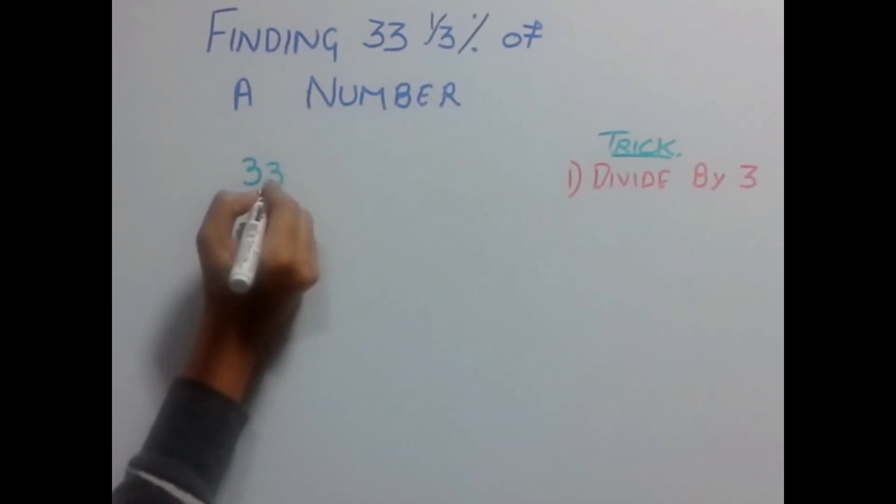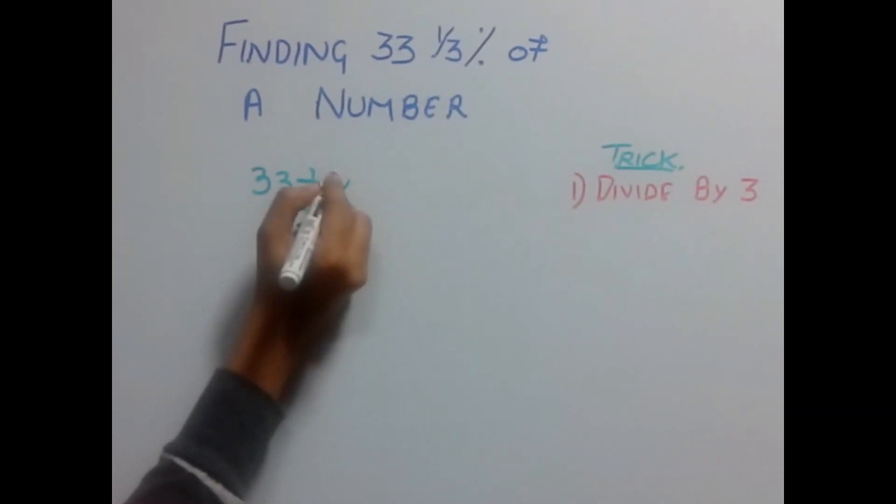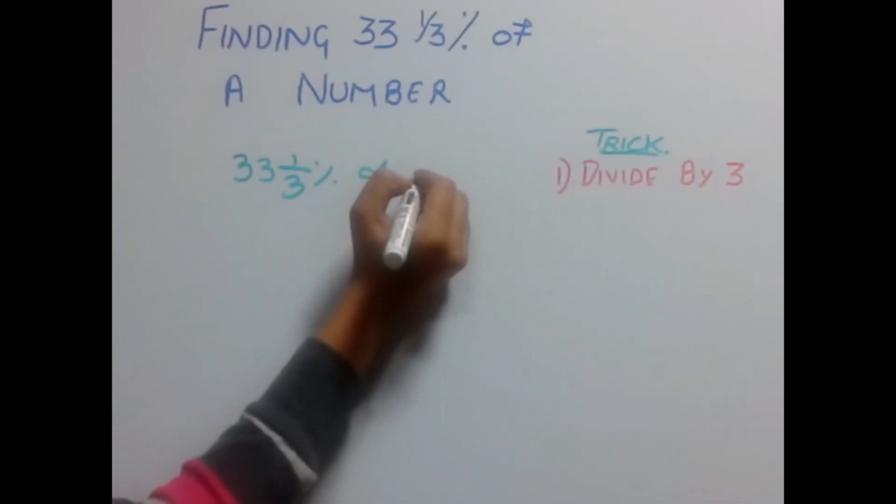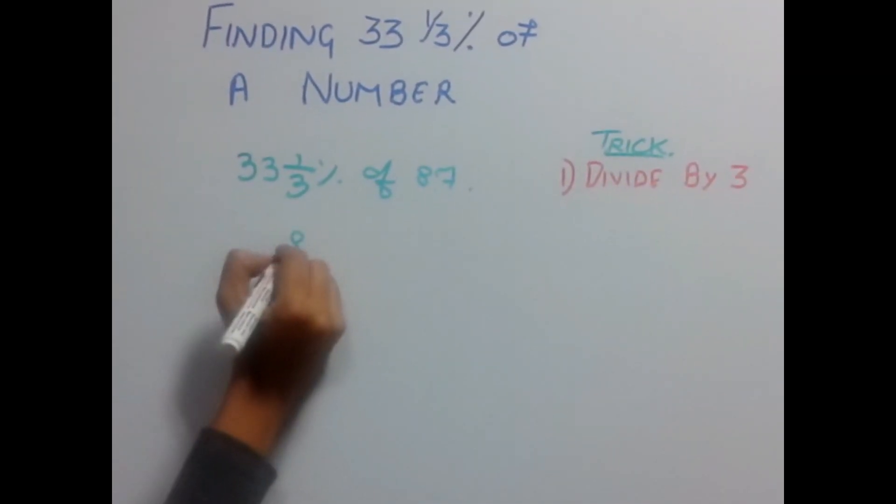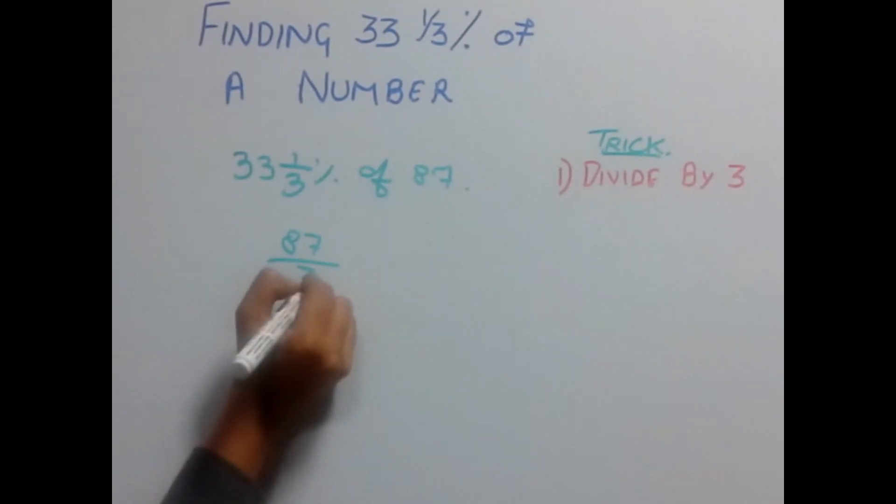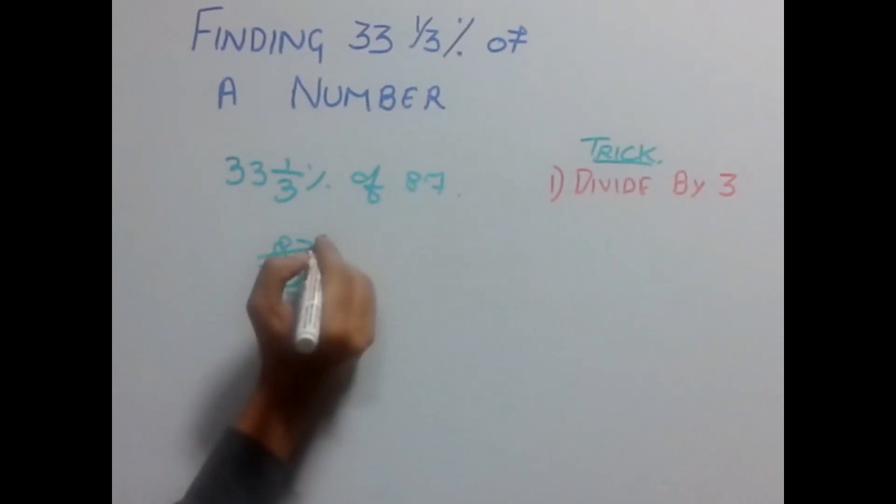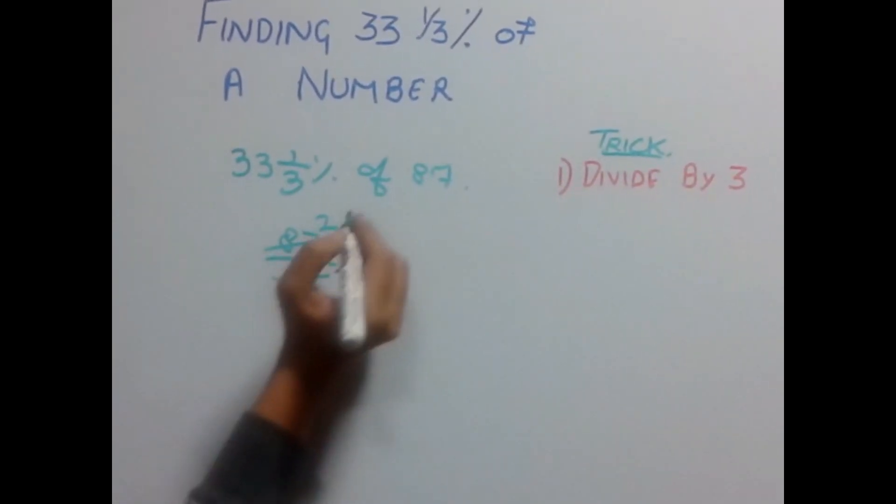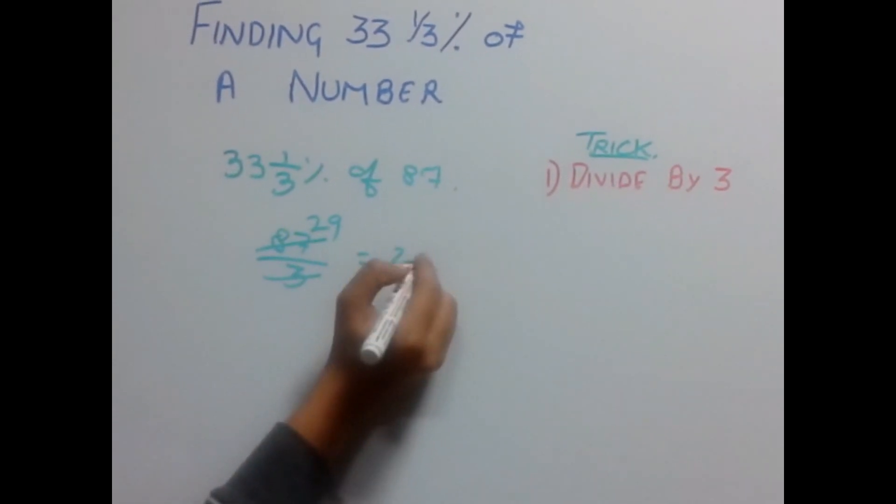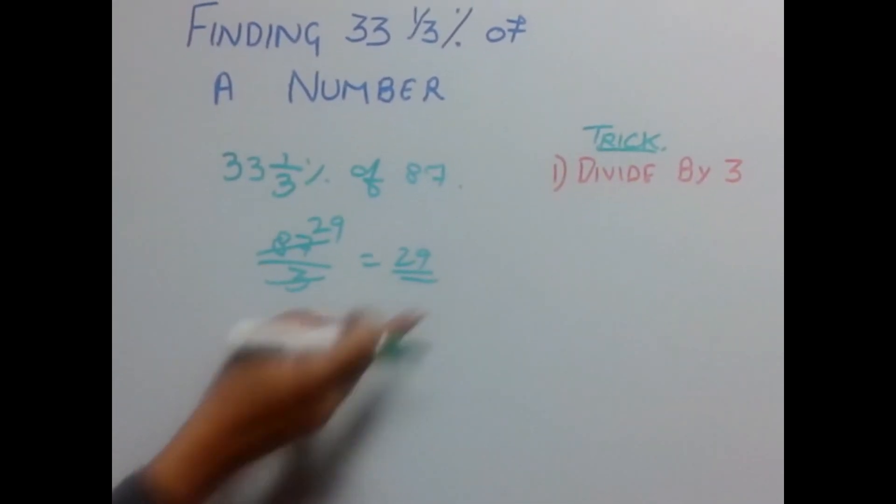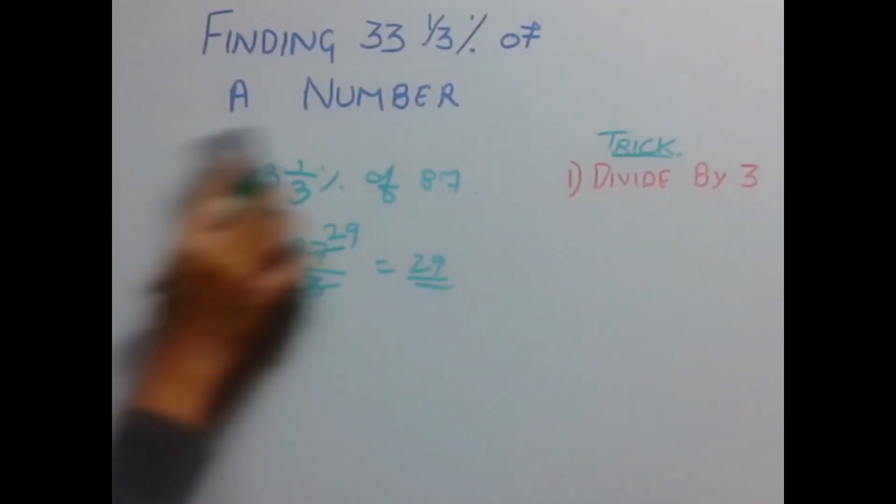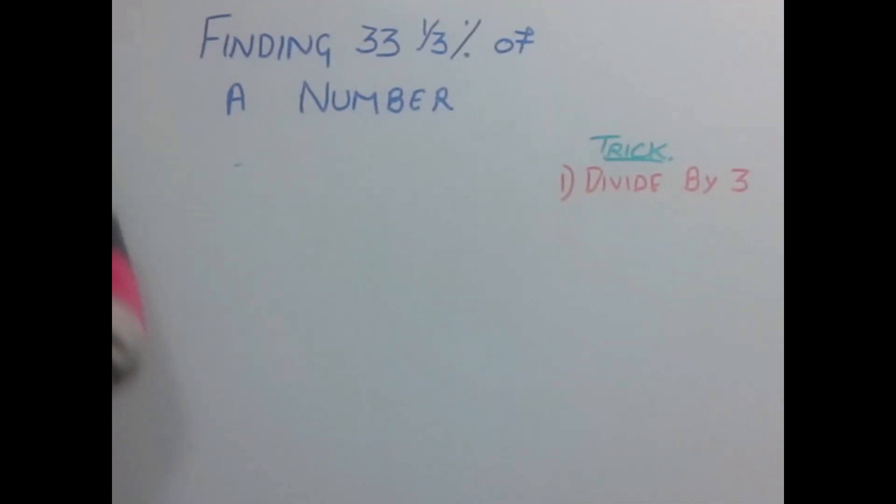Let's find out 33⅓% of 87. Simply divide 87 by 3—that's it—which gives you 29. So, 33⅓% of 87 is 29. Easy! Let's have another example.